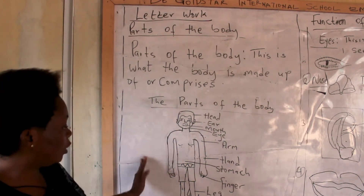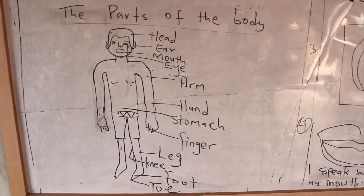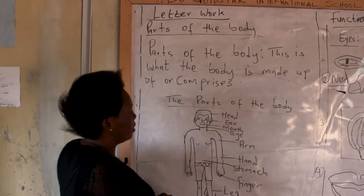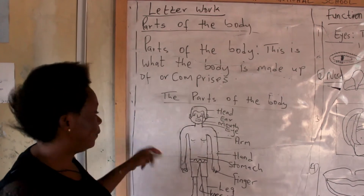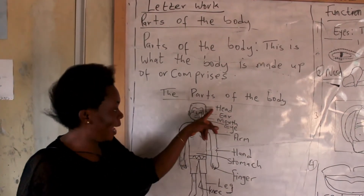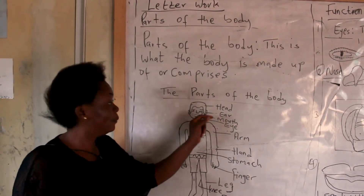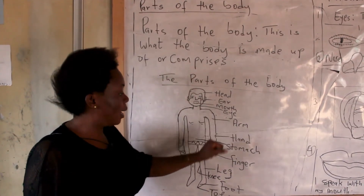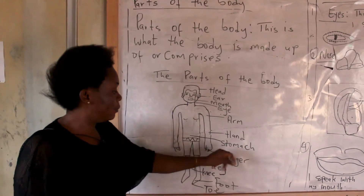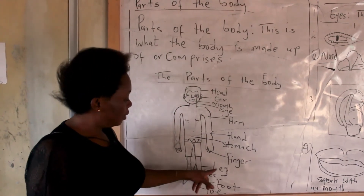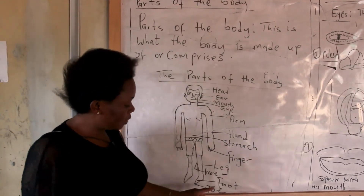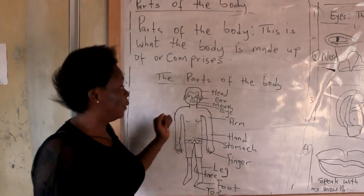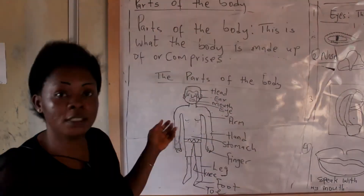Now let's go to the diagram, the drawing on the board. You can see the parts of the body. This is a human being and the parts. Let's take it one after another. Number one, we have head as a part of the body. Ear, mouth, eyes, arm, hand, stomach, fingers, leg, nail, foot and toe. These are the parts of the body, and each part has what it does — that is their function.